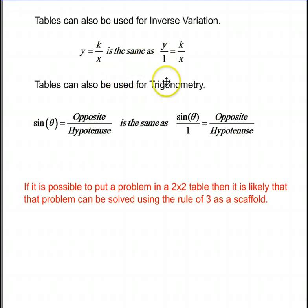Tables can also be used for trigonometry. Sine is just a ratio of opposite over hypotenuse. So we can write it as sin theta over 1 equals opposite over hypotenuse. And here's our table.